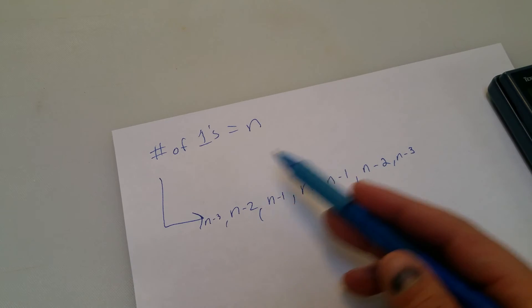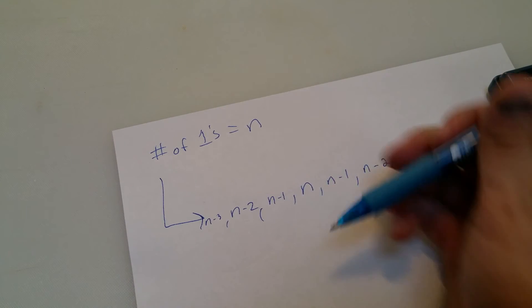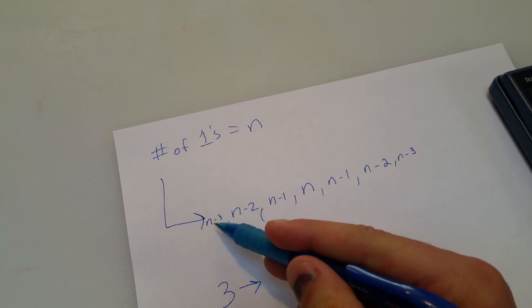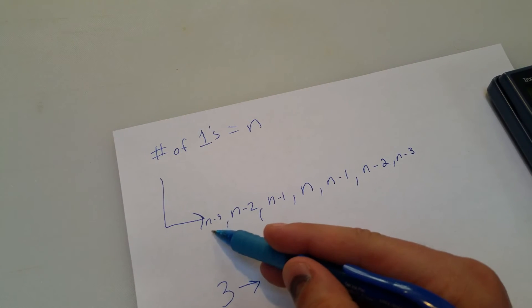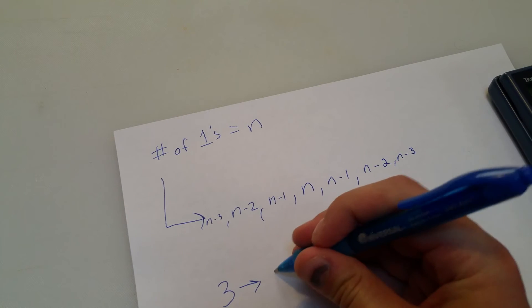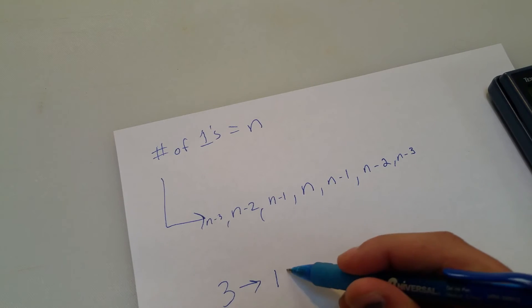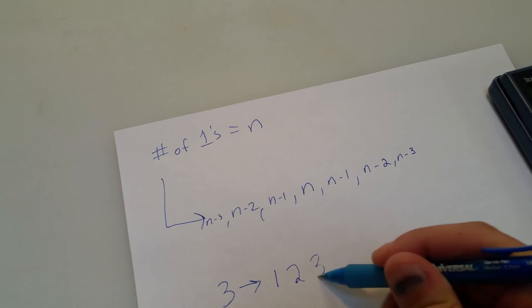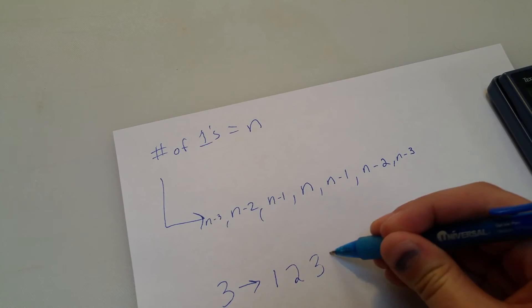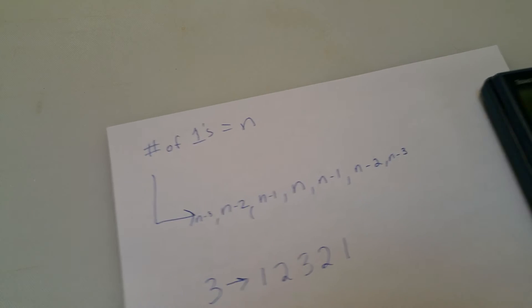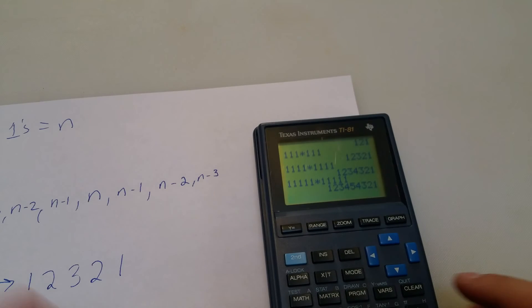For example, if n is 3: n minus 3 is 0 so we ignore that; n minus 2 gives us 1; n minus 1 gives us 2. Then we get a 3 for n in the middle, then 2 going back down, and then 1. We can already confirm it, but let's do it again.